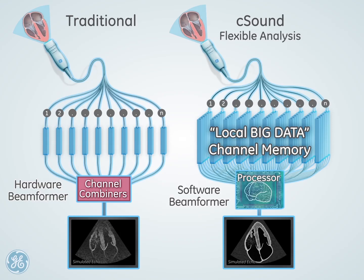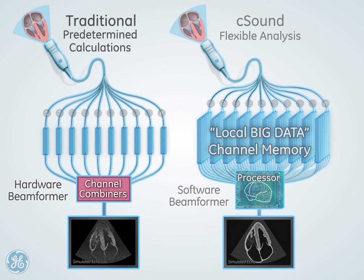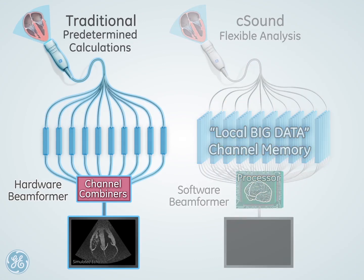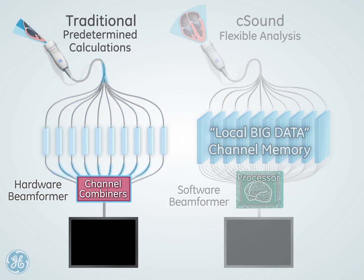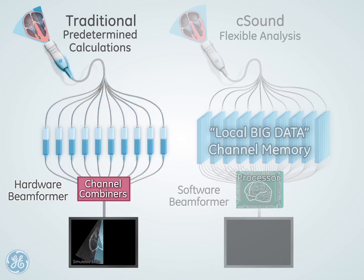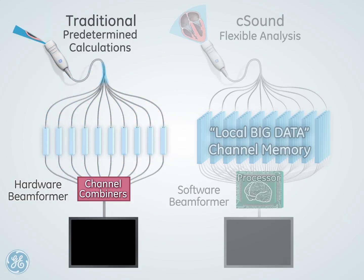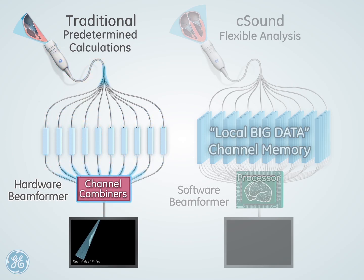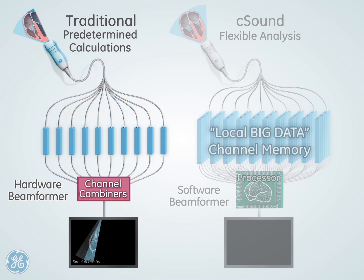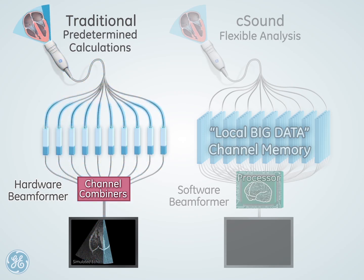Traditional hardware-based beamforming technology uses predetermined calculations in a beam-by-beam fashion, as shown on the left side. As the animation slows down, you can see that as one beam transmits into the body, the data received from each channel is delayed, then combined, and ultimately displayed vector by vector.